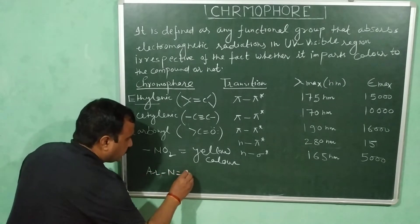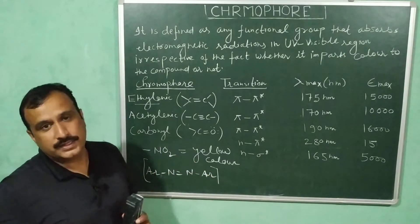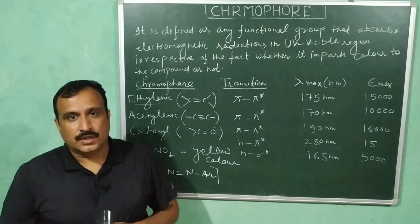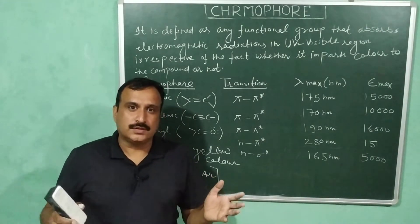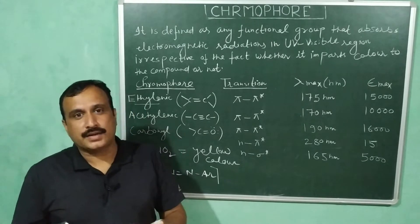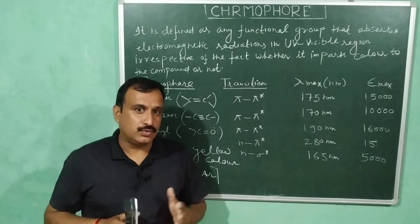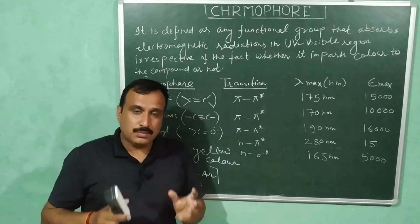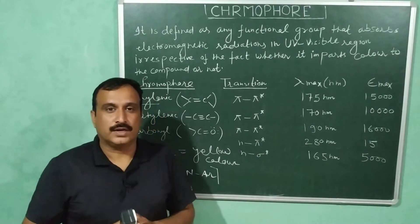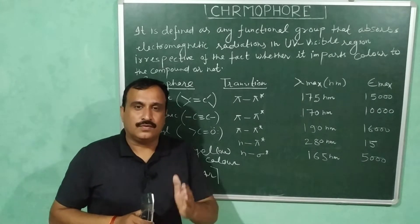So here we have an aryl conjugated azo group, which is responsible for the color of azo dyes — these were the chromophores, that is, groups which impart color to organic compounds. But nowadays, this term chromophore is used in a much broader sense, and it is defined as any functional group that absorbs electromagnetic radiation in the UV visible region, irrespective of whether it imparts color to the compound or not. This is the modern definition of chromophore.